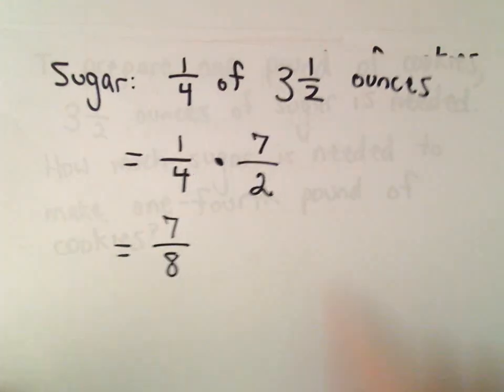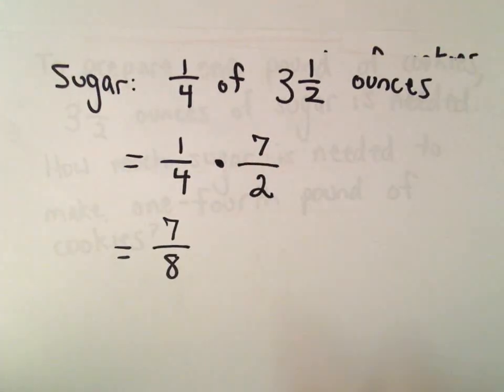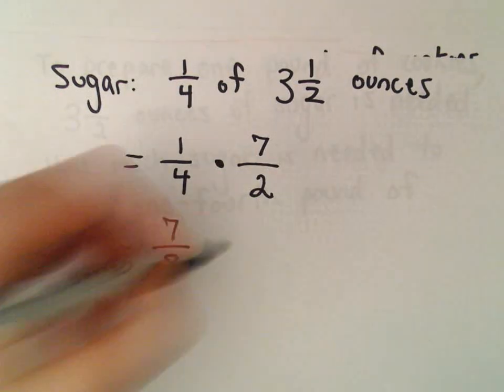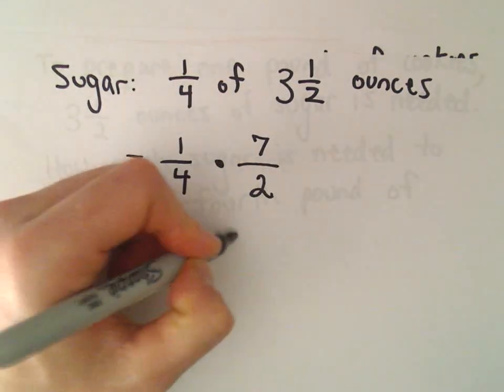So let's see. Before we needed three and a half ounces. So now we'll need seven eighths of an ounce.